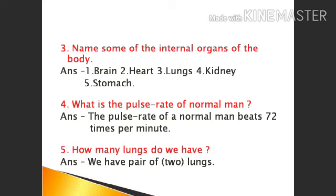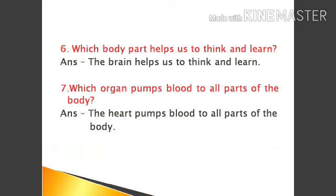Fifth, how many Lungs do we have? Answer: We have a pair of lungs, meaning we have two lungs. Sixth, which body part helps us to think and learn? Answer: The Brain helps us to think and learn. Seventh, which organ pumps the blood to all parts of the body? Answer: The Heart pumps the blood to all parts of the body. Thank you.